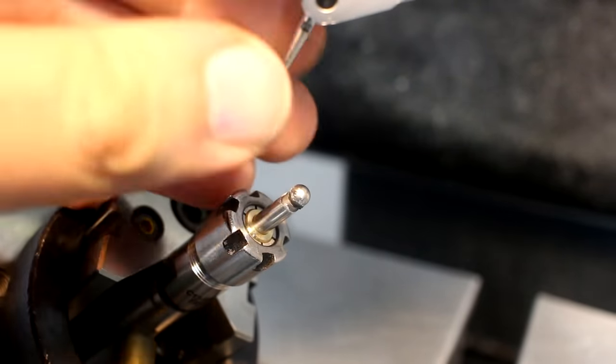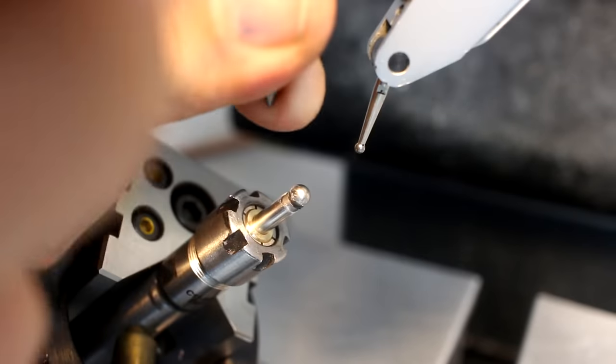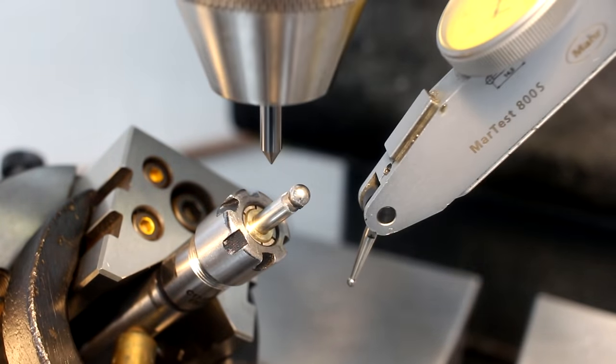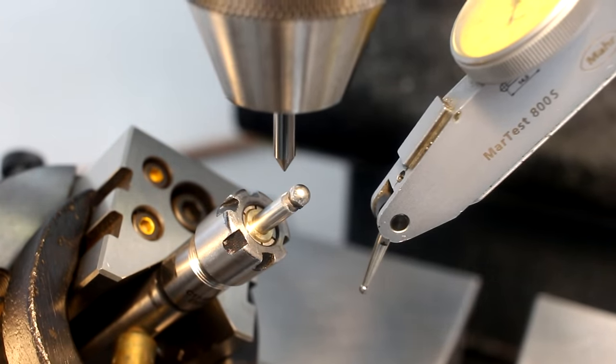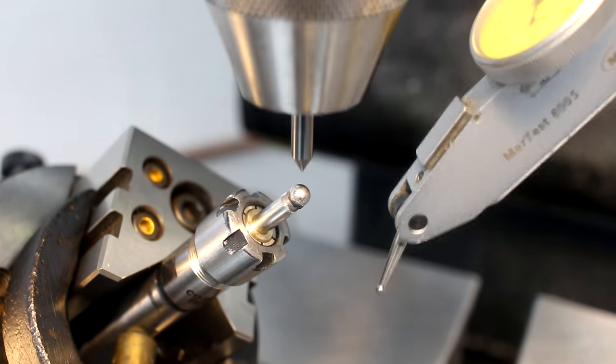So now is the moment when we bring the dial test indicator in. And for rough alignment, since we have a drill chuck in the spindle already, why not use a pointer? That's a very quick way to get a rough alignment like this.